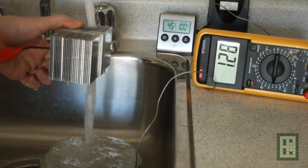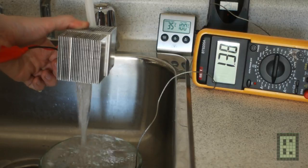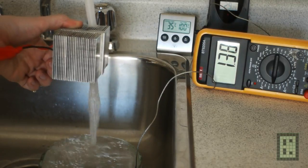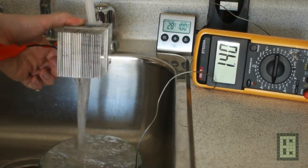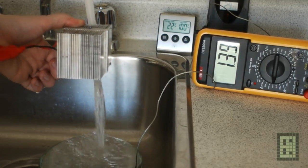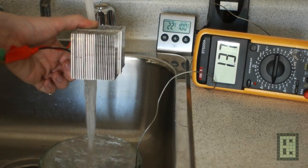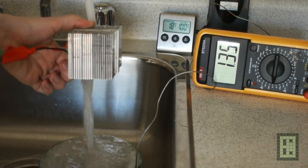And now you see that I switched to current and the current is now about 1.4 amps - it will reach about 1.45 amps. So this is the maximum current you could get out of this module at this temperature difference.